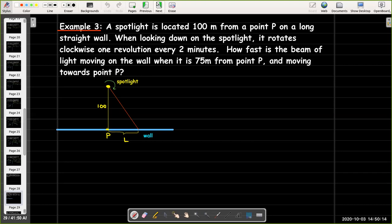Well, what do we know? Well, I'm going to call theta the angle between the beam of light and the line connecting the spotlight in point P. And, that makes sense for this question. And, in that sense, theta is getting smaller as the spotlight rotates.